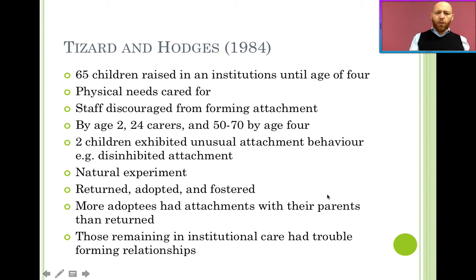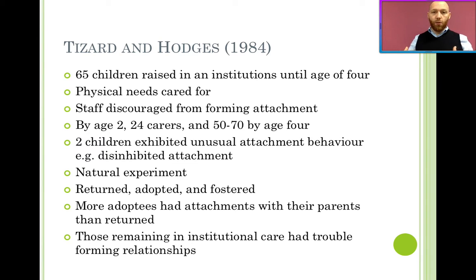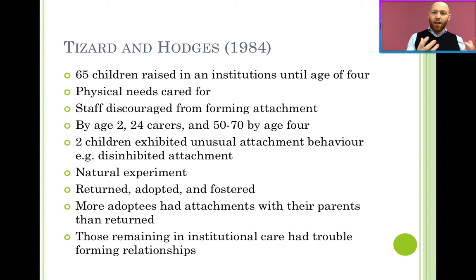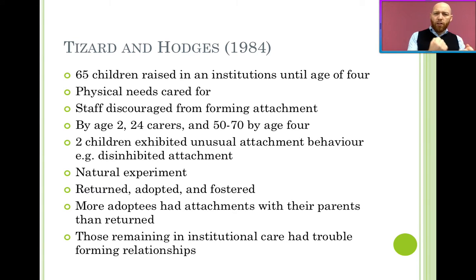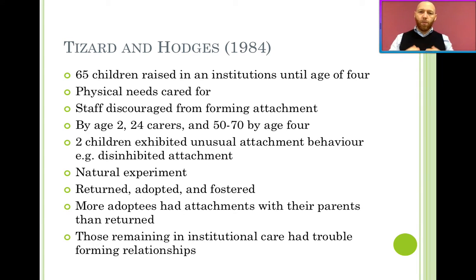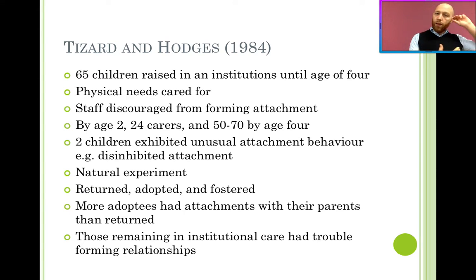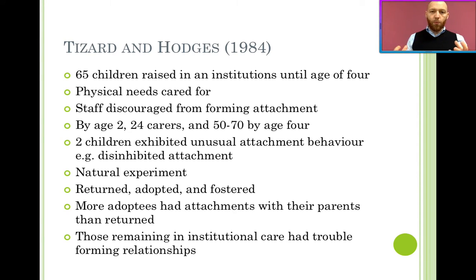It's worth noting that it is possible that the reason why many of the adopted children formed strong attachments, while the restored children struggled, may be that adoptive parents try harder — these are people who really, really want kids and may be more sensitive. We could bring Ainsworth in to back this up. It could also be that the biological parents had to give the children up in the first place for a reason, and even if they've become capable of providing care, the quality of that care may have been an issue.